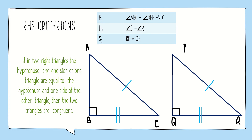Let's move on to the last criterion, that is the RHS criterion, which states that if in two right triangles the hypotenuse and one side of one triangle are equal to the hypotenuse and one side of the other triangle, then the two triangles are congruent. As we can see in triangle ABC and triangle PQR, the hypotenuse AC and PR are equal, and the base BC and QR are also equal, hence the two triangles are congruent. If AB is equal to PQ, we can also say the triangles are congruent, because either the height or the base along with the hypotenuse must be equal.